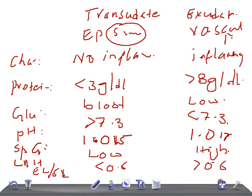Regarding cells: in transudate there are very few cells — mainly epithelial cells and cellular debris — since it is a filtrate from blood plasma. In exudate you see many cells such as inflammatory cells, parenchyma cells, and neoplastic cells. The key parameters to remember are LDH, glucose, and protein content.